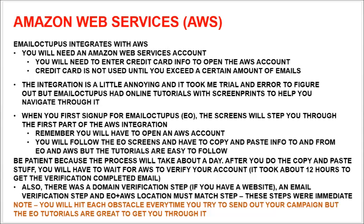When you first sign up to Email Octopus, the screens will step you through the first part of the AWS integration. You'll need that free AWS account, and then just follow the screens and do some copy and pasting of info between the two. The tutorials are going to make it easy. Just be patient — the process will take about a day to get everything set up, and after the copy and pasting you have to wait for AWS to verify your account, which usually takes about 12 hours.